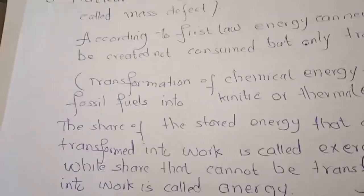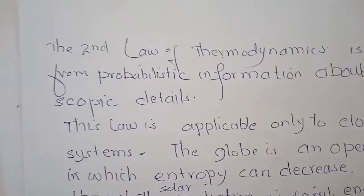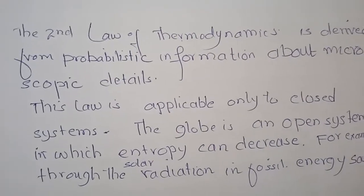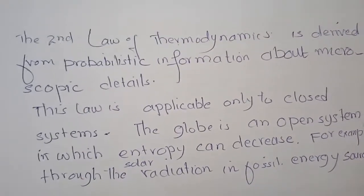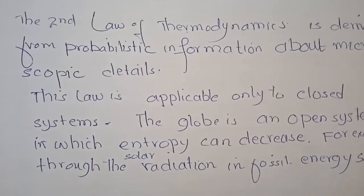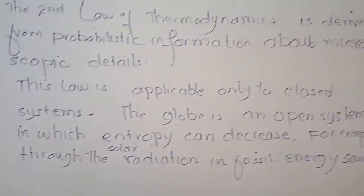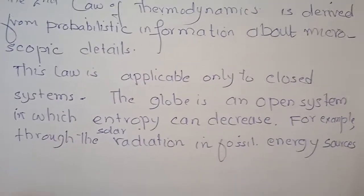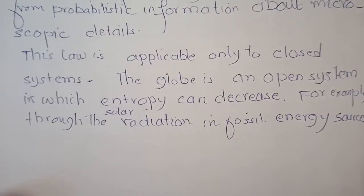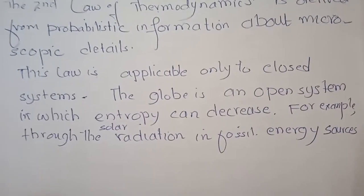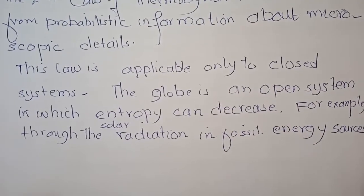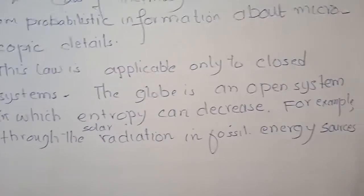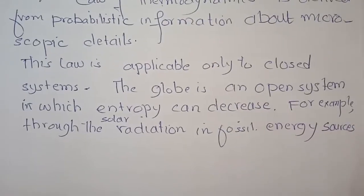This law, the second law of thermodynamics, is derived from probabilistic information about microscopic detail. There are two types of information: one is probabilistic and the other is deterministic. Here we are more interested in probabilistic information, which is based on probability.